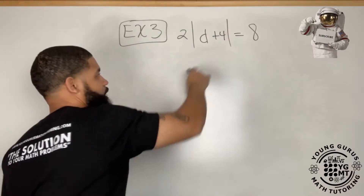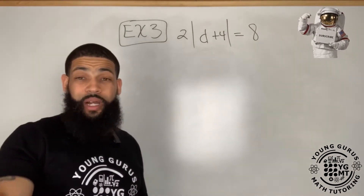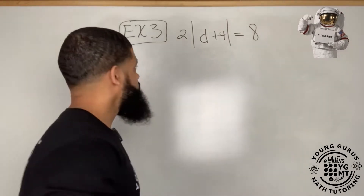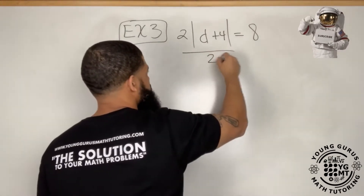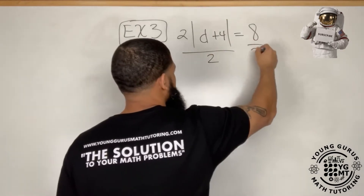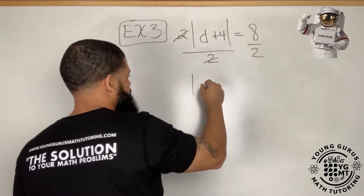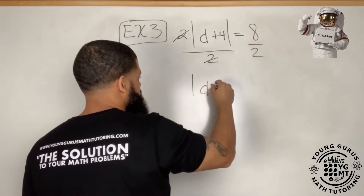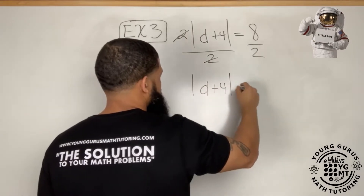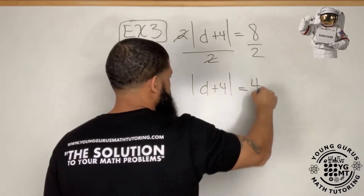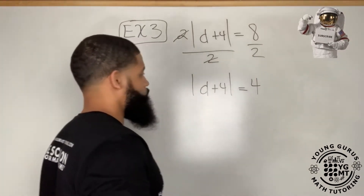To get the absolute value term in parentheses by itself, I need to divide by two. That cancels, giving us the absolute value of d plus four is equal to four — since eight divided by two is four.